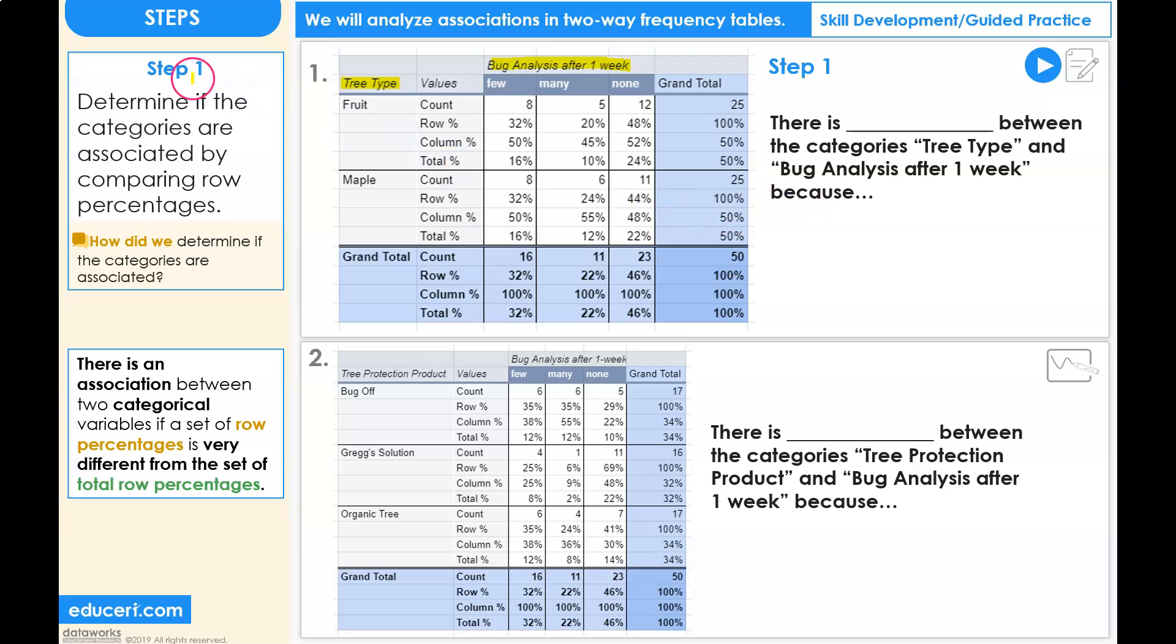Step one. Determine if the categories are associated by comparing row percentages. Looking at the row percentages, here's the grand total row.